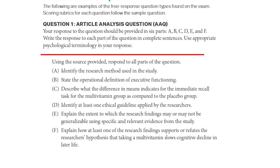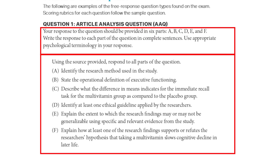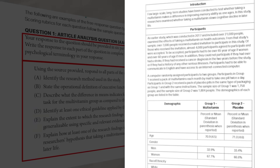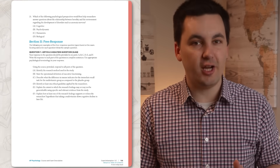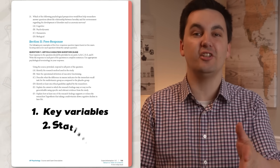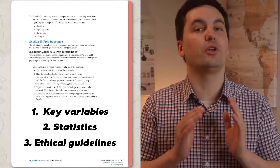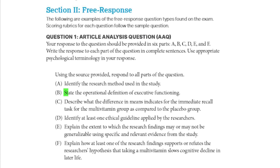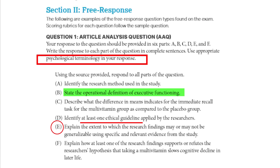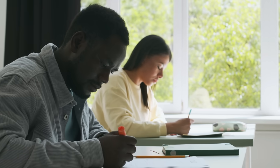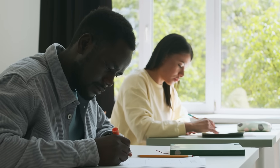When you get to the AAQ on the national exam, I would first read the prompt and the different parts of the AAQ before going on to read the peer-reviewed study. This will help you see what the focus of the AAQ is going to be, so that when you are reading the peer-reviewed study, you can be on the lookout for the key variables, statistics, ethical guidelines, and any other information you will need. When reading the AAQ, make sure you highlight, underline, and mark up the document to help you focus on the key terms and concepts.